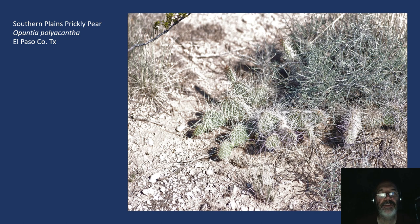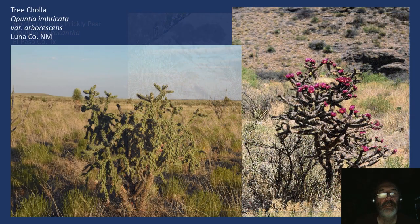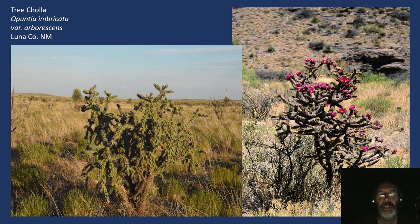Southern Plains prickly pear, Opuntia polyacantha — not found immediately in our area, but just a little bit to the east of El Paso they become fairly common, and all over the place up in Otero County in the grasslands. The tree cholla, Opuntia imbricata — this is a variety of arborescens, fairly familiar to anybody who drives around New Mexico up into Colorado. There are places in southern Colorado, up around Pueblo, where there are just forests of these.